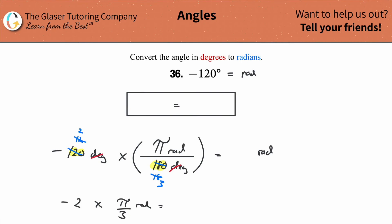Negative two multiplied by pi over three radians. And what does that equal? Well, negative two pi over three radians. Literally that simple.